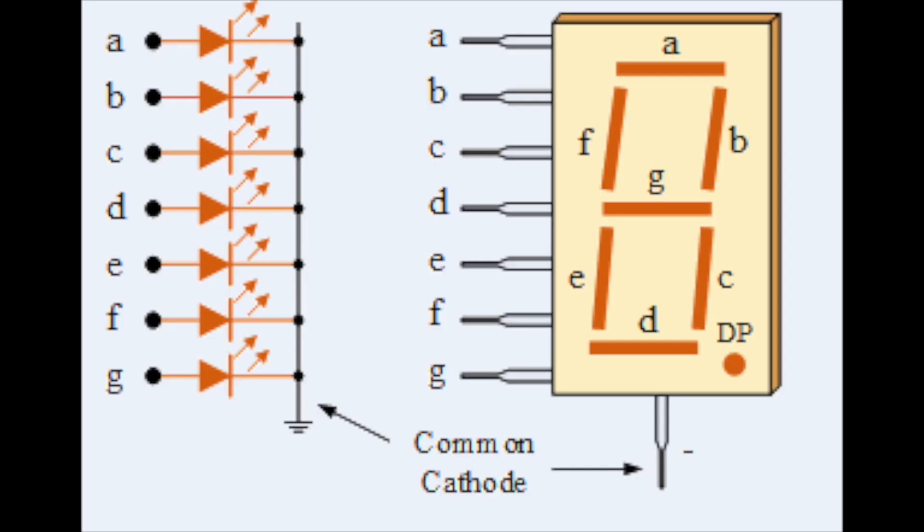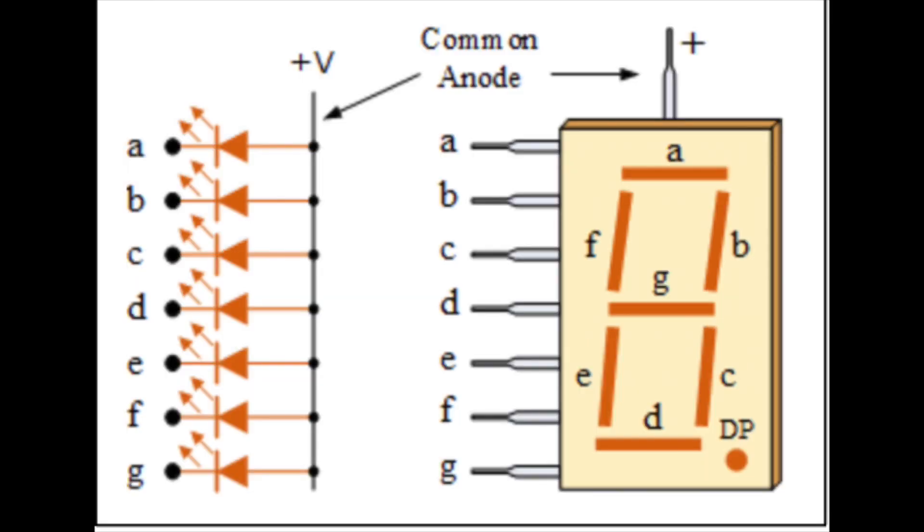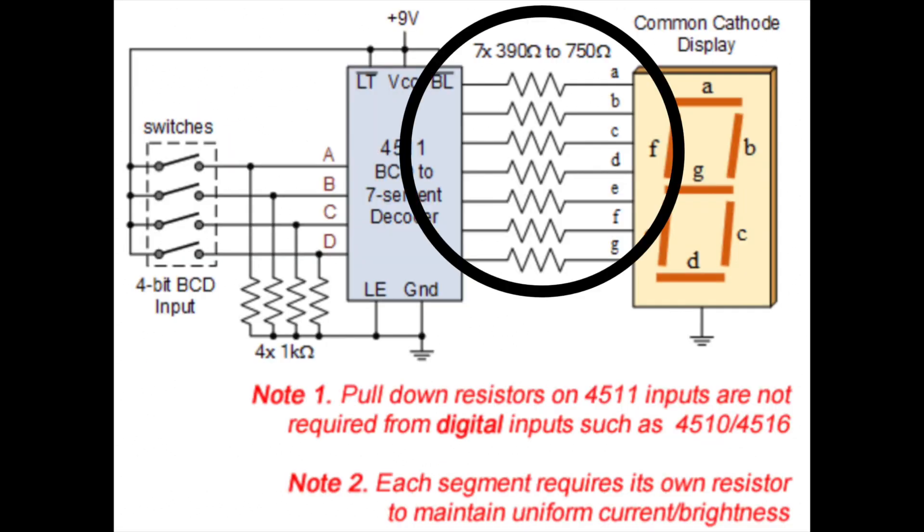There are two types of 7 segment displays, common cathode and common anode. Like the name suggests, the common cathode has all the cathodes of the LEDs connected to ground, while the common anode has all the anodes of the LEDs wired to V+. Each segment requires its own current limiting resistor because without it, the segment will likely blow, rendering the device useless.